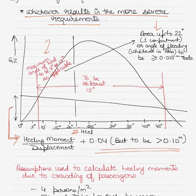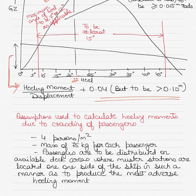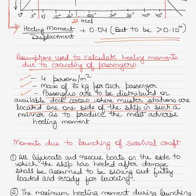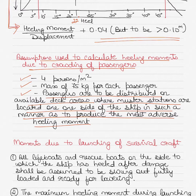There are certain assumptions used to calculate heeling moments due to crowding of passengers. Four persons per meter square of the vessel's length are assumed, and the mass of each passenger is considered to be on average 75 kilograms. Passengers are to be distributed on available deck areas where muster stations are located, on one side of the ship, in such a manner as to produce the most adverse heeling moment.